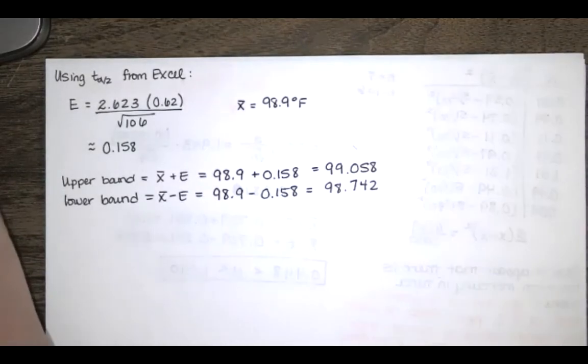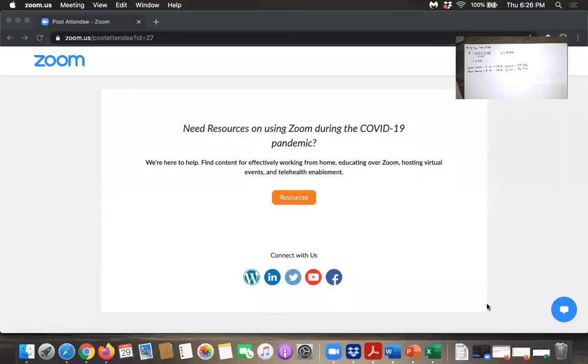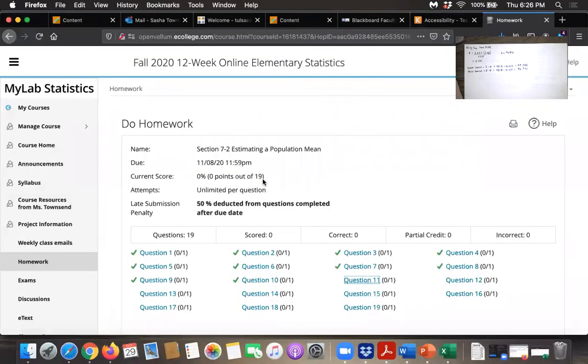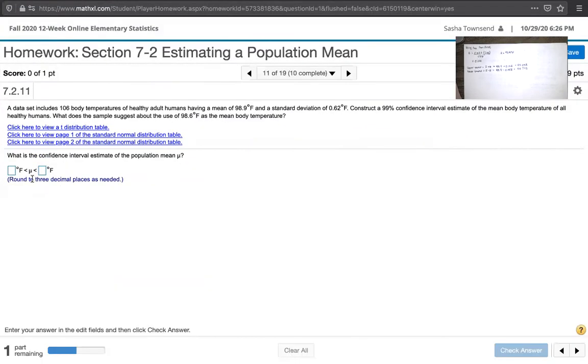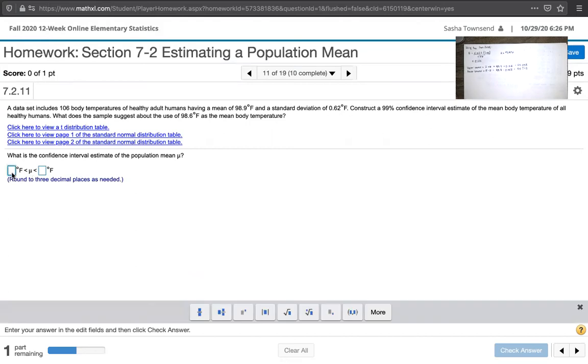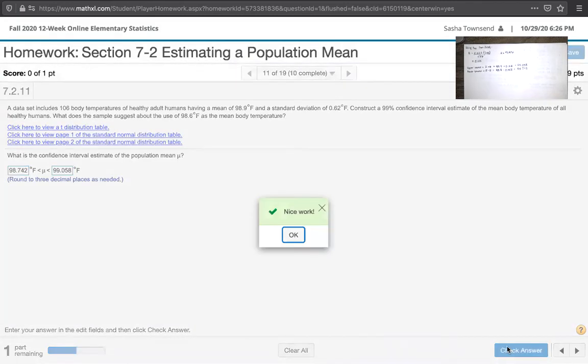Let's look at the homework. They're asking us for an upper and lower bound, and we want to round to three decimal places. The lower bound is 98.742 and the upper bound is 99.058. My lab statistics likes it, so we know we did something right.